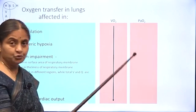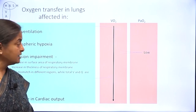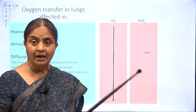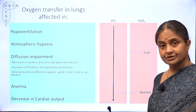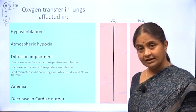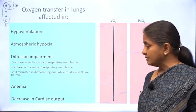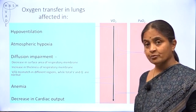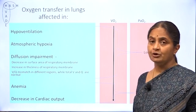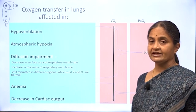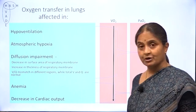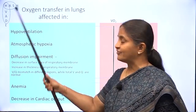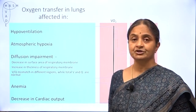But arterial PO2, or partial pressure of dissolved oxygen in arterial blood, is affected only in the first three conditions, and we refer to that as arterial hypoxia. Arterial PO2 is not affected in anemia or cardiac failure. In anemia, content of arterial oxygen is lower. In cardiac failure, even arterial oxygen content is normal, but what is impaired is the amount of oxygen delivered per minute because blood flow is slower — what we call stagnant hypoxia. We will look at carbon dioxide diffusion and come back to this same framework.